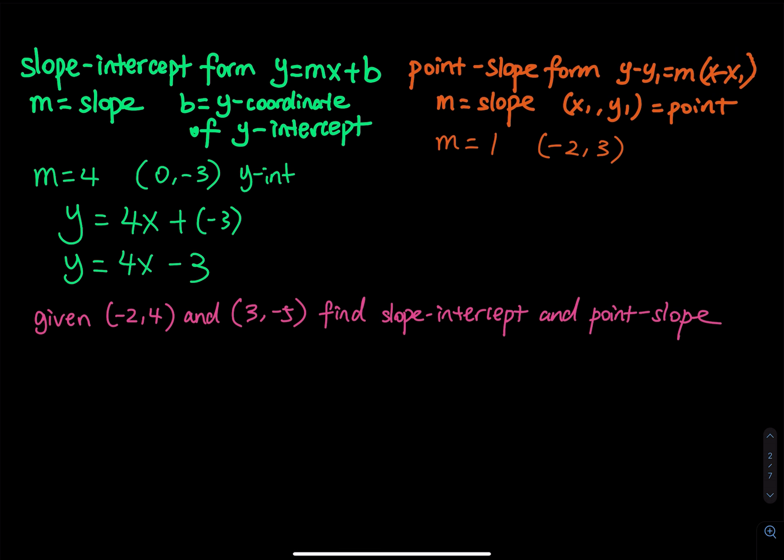This is the slope-intercept form — you can see the slope and you can see the y-intercept.